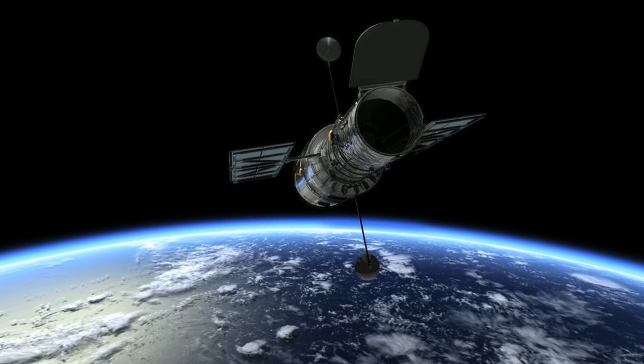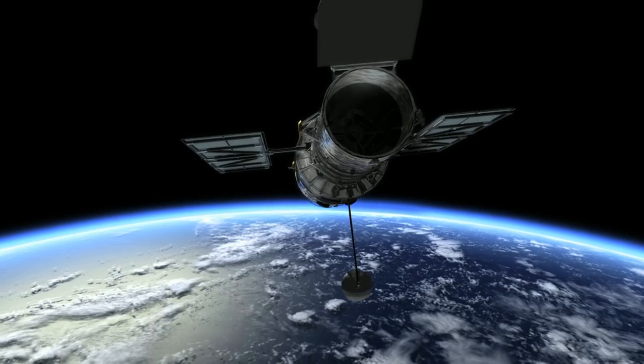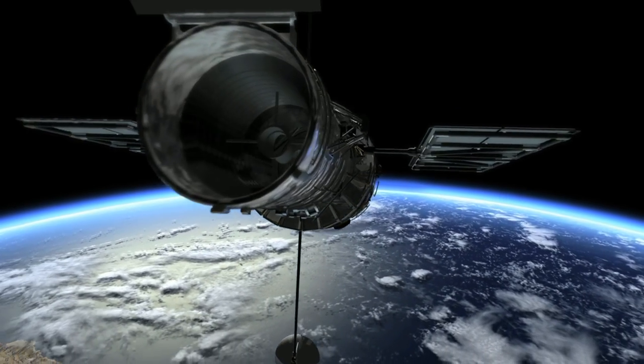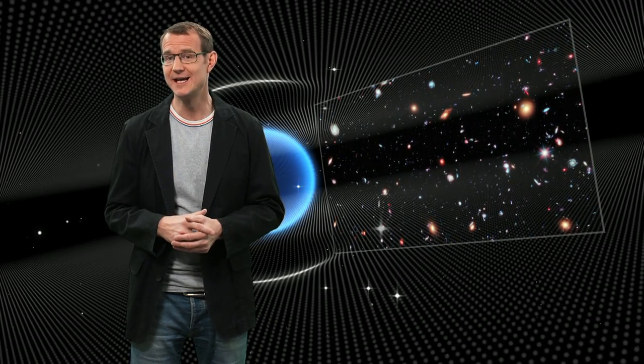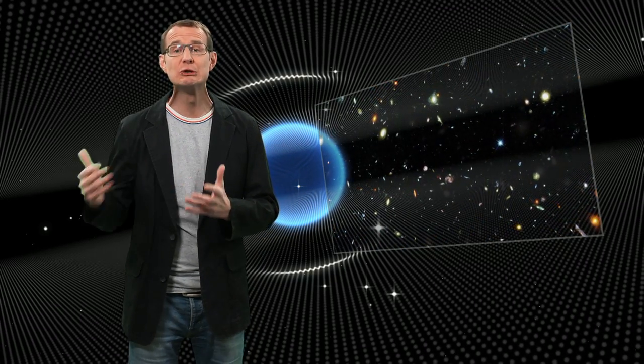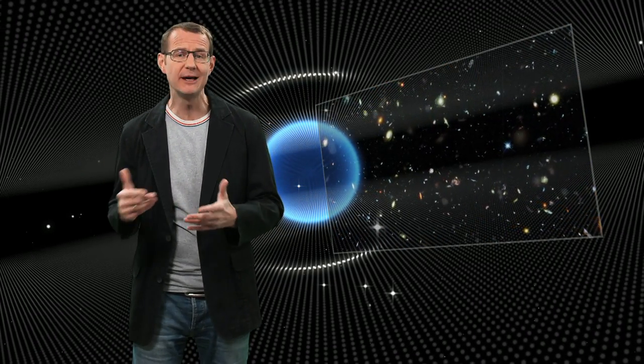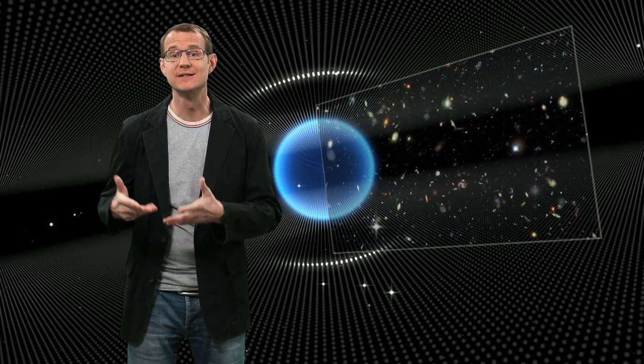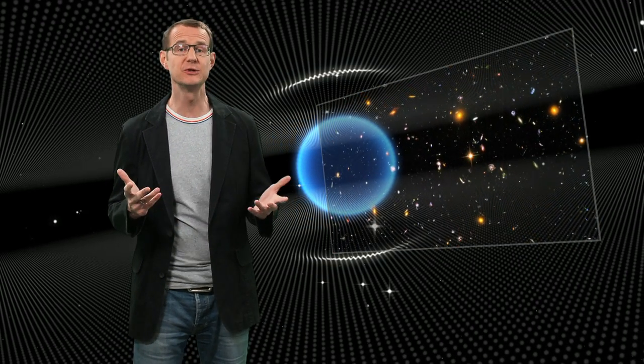Now Hubble has produced some of the very deepest images of the universe ever. But even these extraordinary images have their limitations. We know that there are galaxies that are simply too distant and therefore too faint to show up even in these extremely deep images. So what can we do?